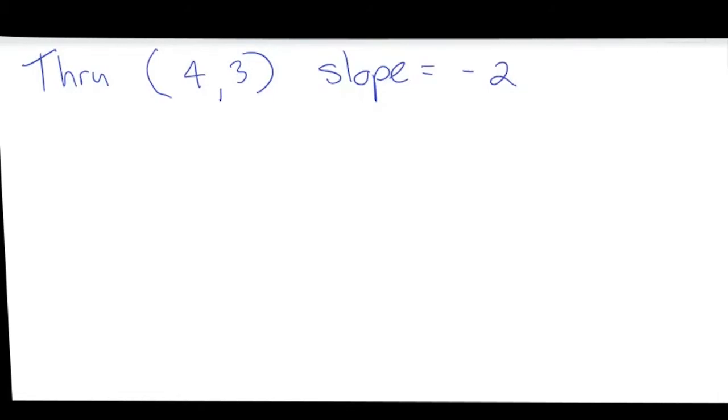So here we are given that the line goes through the point 4, 3, and has a slope of negative 2. So we know x and we know y and slope is m.